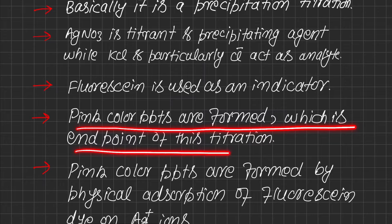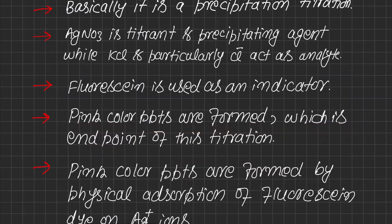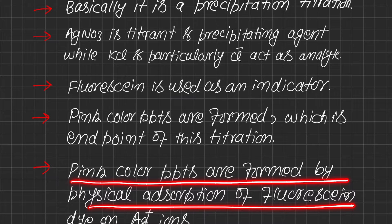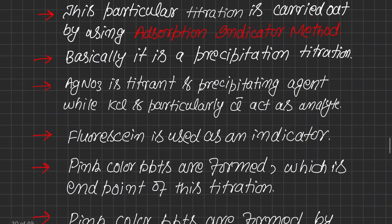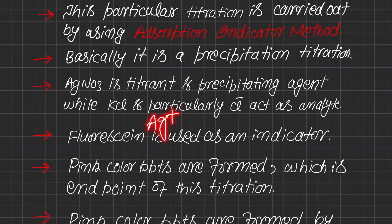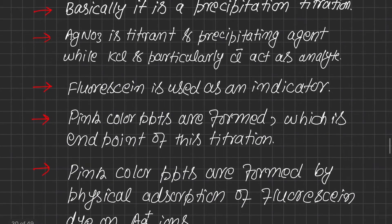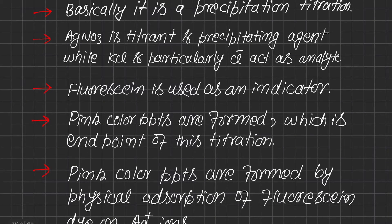The endpoint of this titration is pink color precipitates. These pink color precipitates are formed because of the silver–fluorescein complex. The pink color is formed by physical adsorption of fluorescein dye on silver ions. That is why this is called the adsorption indicator method — because the fluorescein dye is physically deposited on silver ions, giving pink color precipitates.